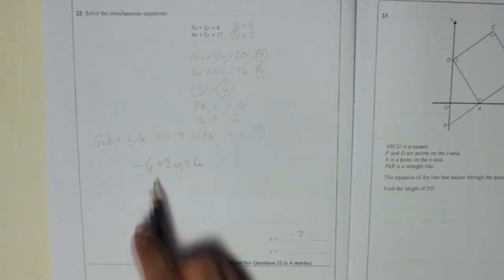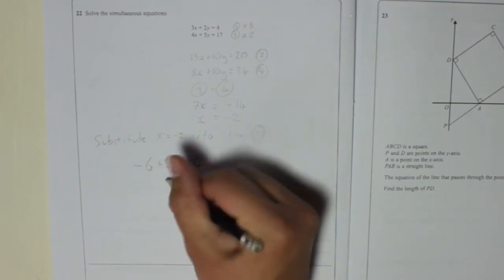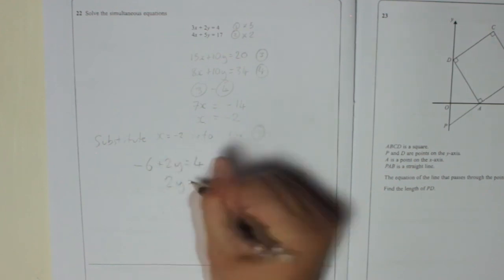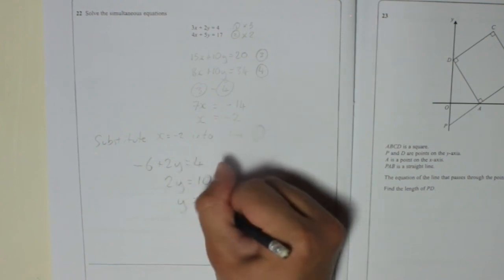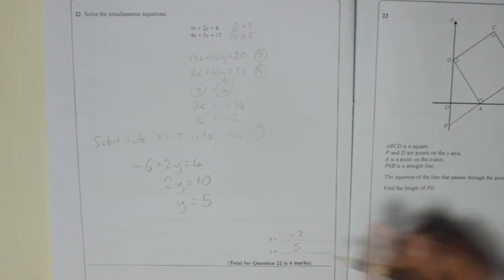So now we're just going to solve it as we would. I'm going to get rid of minus 6 from this side to leave us with 2y. So I'll add 6, which means I'm also going to add 6 to this side. 4 plus 6 is 10. 2y is 10, so y is 5. Done.